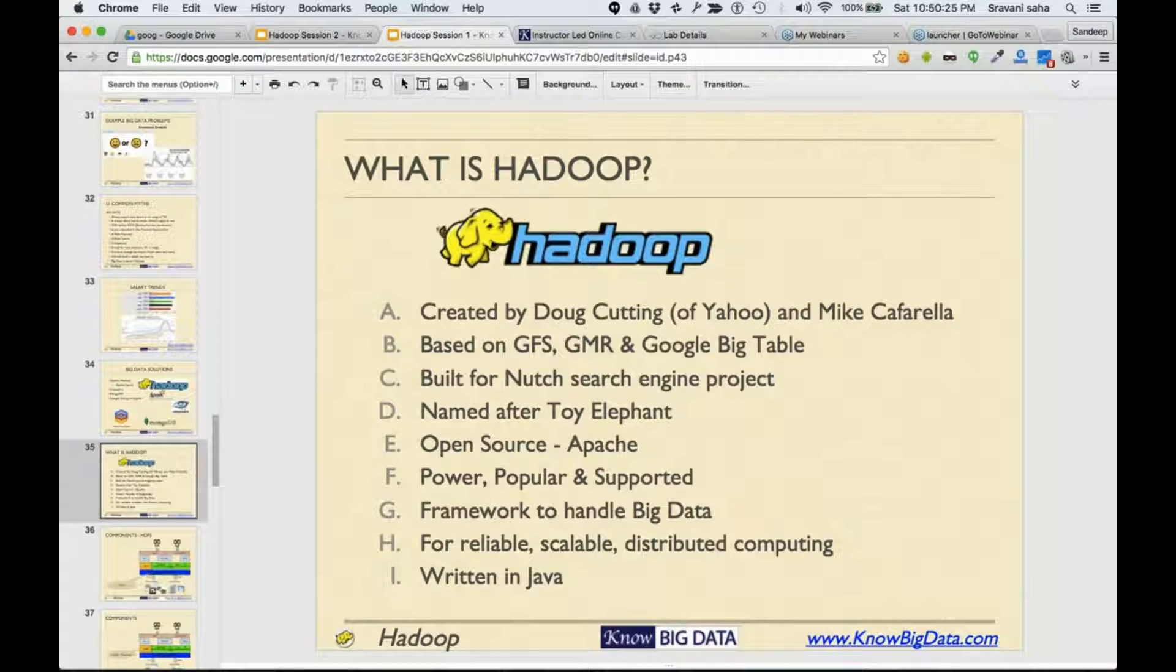It was named after a toy elephant that Doug Cutting's son was playing with, and it is open source. This is probably one of the reasons why Hadoop exists. There were many other people doing non-open source implementations of the same paper, but they did not get anywhere.